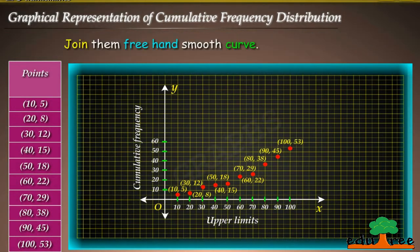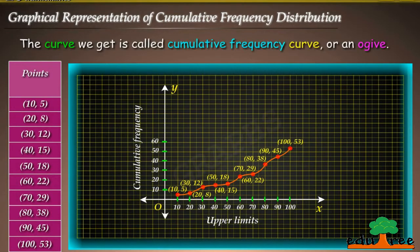Join them freehand smooth curve. The curve we get is called Cumulative Frequency Curve or an Ogive.